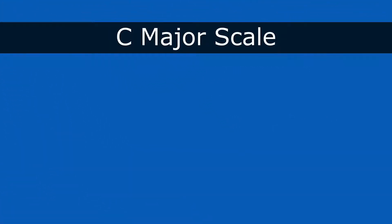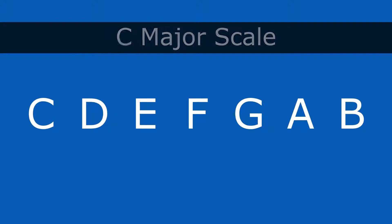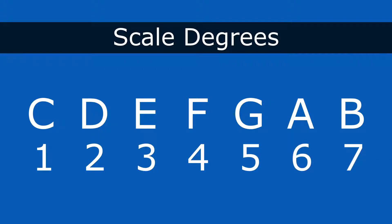So remember the C major scale. We got C, D, E, F, G, A, B. And then we numbered each one of those, getting our scale degrees: 1, 2, 3, 4, 5, 6, 7.